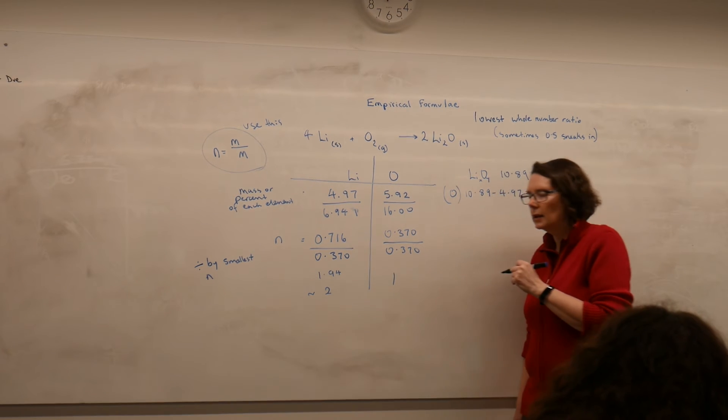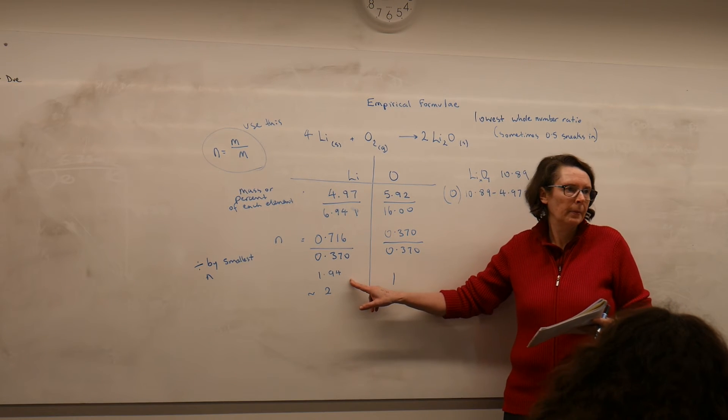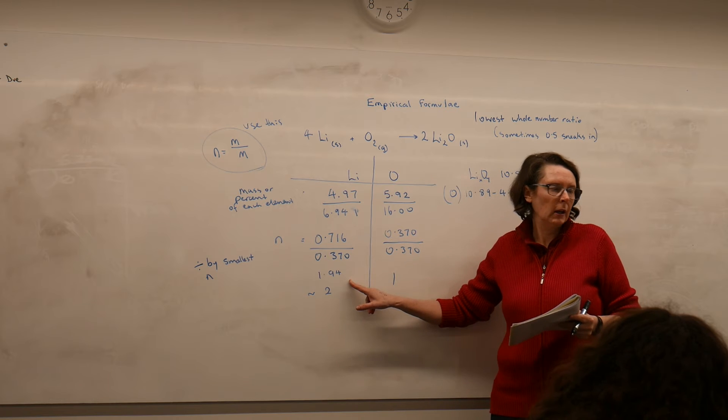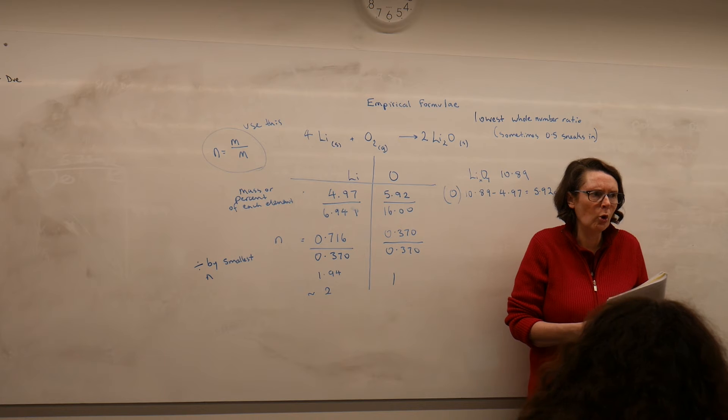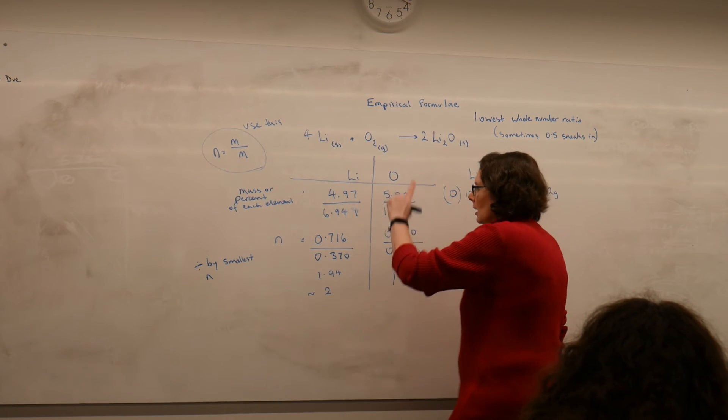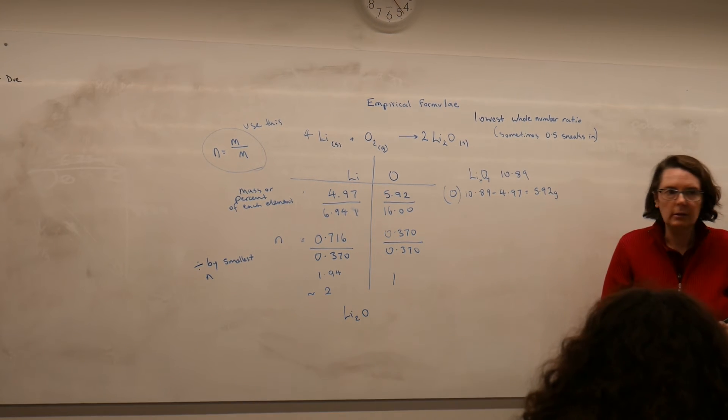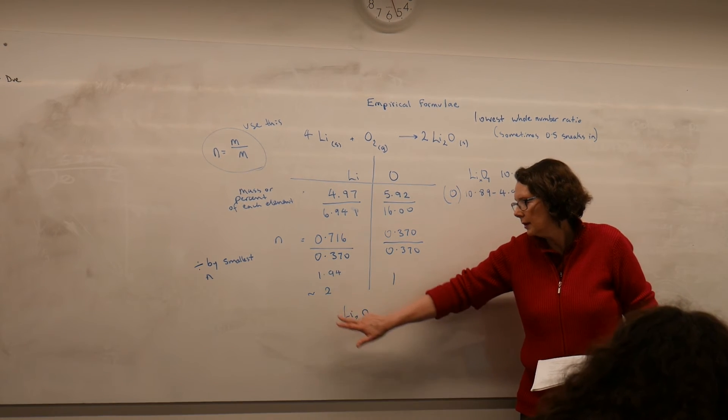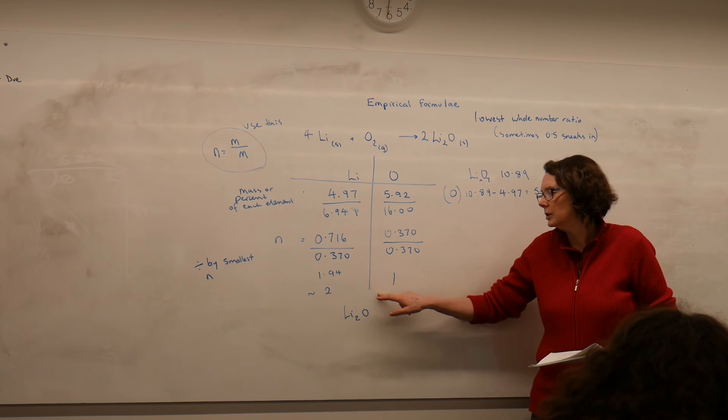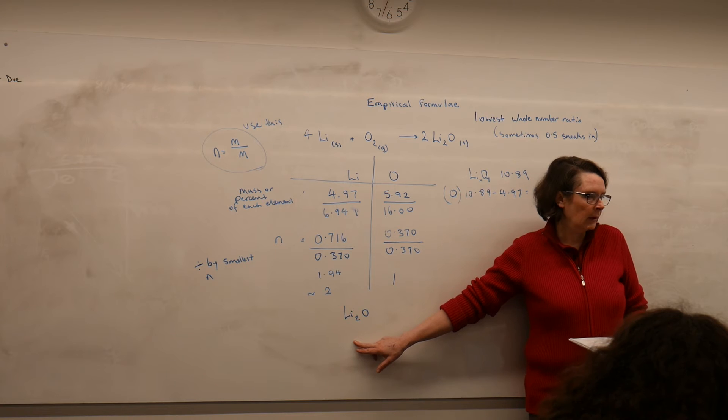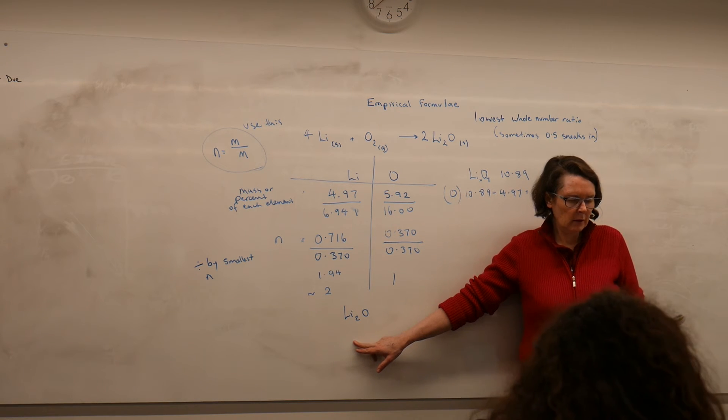So again, that's a common mistake that students will make is that they'll get something like 0.7 or 2.3 and they'll round that. That's a long way away. And so what this has told me is my oxide is lithium oxide. Because this 2 tells me that I've got 2 lithiums for every oxygen in my compound. And I just used these numbers to write the name of the compound. Is that okay?